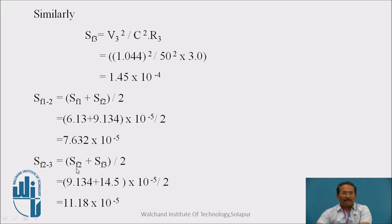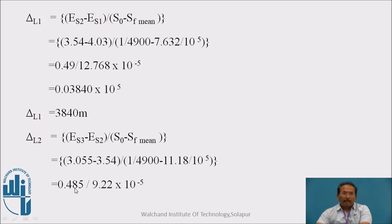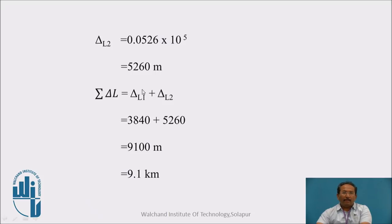Put these values, delta L1 is Es2 minus Es1 upon S0 minus Sf mean. Sf mean of 1, 2 first and then 2, 3 second. In the 1, 2 we are getting 3840 and the second we are getting 5260. Take an addition of these two, it is 9.1 kilometers. This is the perfect procedure for solving by step method or we can say direct step method. We can solve this by single step also. In the next problem, we will compare this method with a single step directly and we will compare the results.